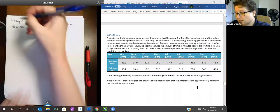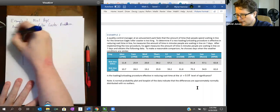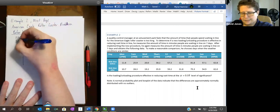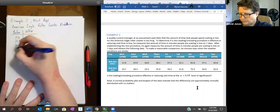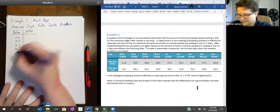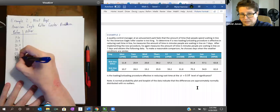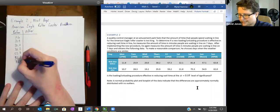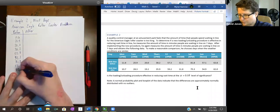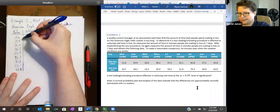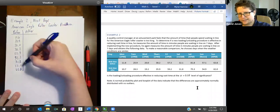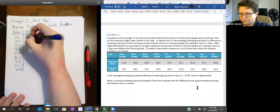To make it reasonable, he chooses days when the weather conditions are similar. It doesn't make sense to do Sunday days versus rainy days. It looks like he does Monday at two o'clock, Tuesday at two o'clock. Looks like he does on the weekdays at two o'clock several days. And on the weekend, he does a couple times in the day. So it looks like he's got a bunch of data points. Is the loading unloading procedure effective in reducing wait time at the alpha equals 0.05 level of significance. Note a normal probability plot and box plot indicate the differences are approximately normally distributed with no outliers. So if we do make a column of before and after, I'm just going down the list.